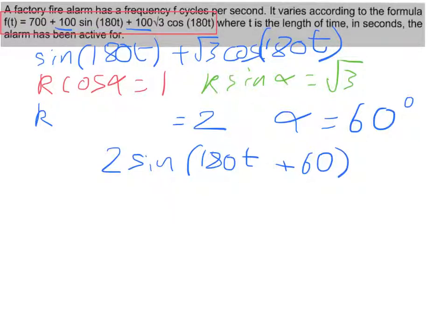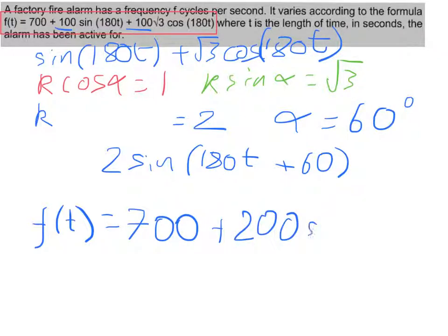If we go back and actually look at our original function, f of t, well we've got that 700 plus. Now remember, we took out a factor of 100 to start, so this 2, we need to put the 100 back in. That would give me 200. 200 sine 180t and I've run out of space, plus 60. And that is what I had in the main video for this question. So what I've done here is I've just shown you the steps I've missed out.